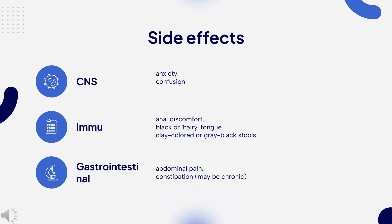Side effects of bismuth subsalicylate include: abdominal pain, anal discomfort, anxiety, black or hairy tongue, clay-colored or gray-black stools, cold symptoms — stuffy nose, sneezing, sore throat — confusion, and constipation, which may be chronic.